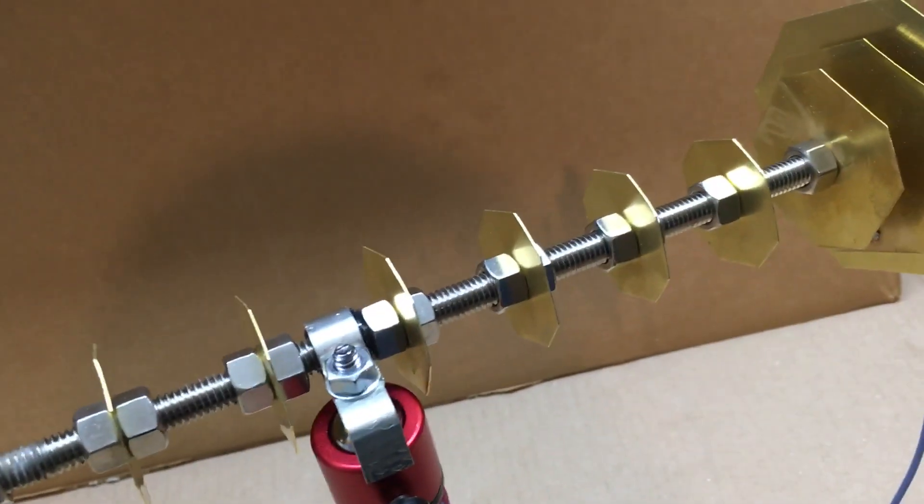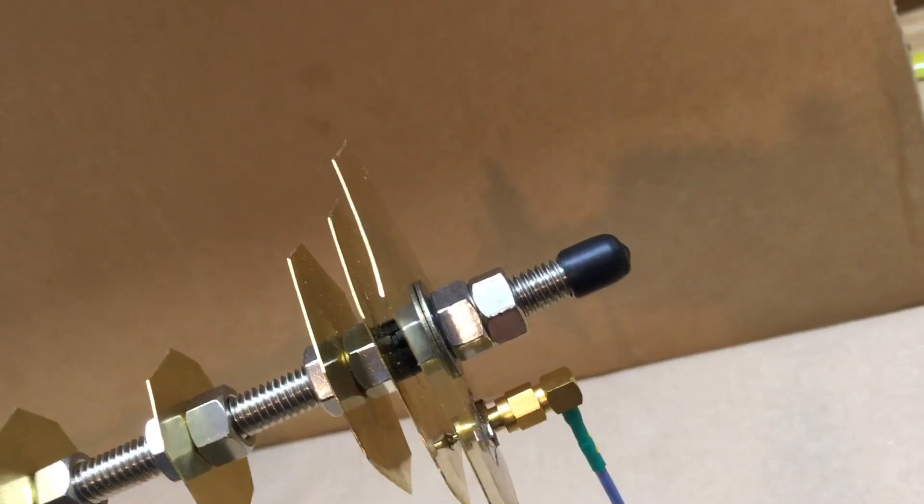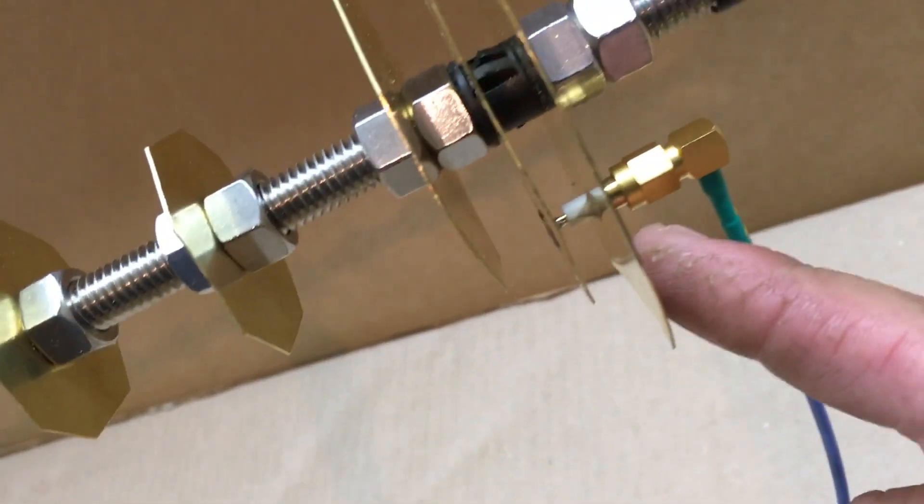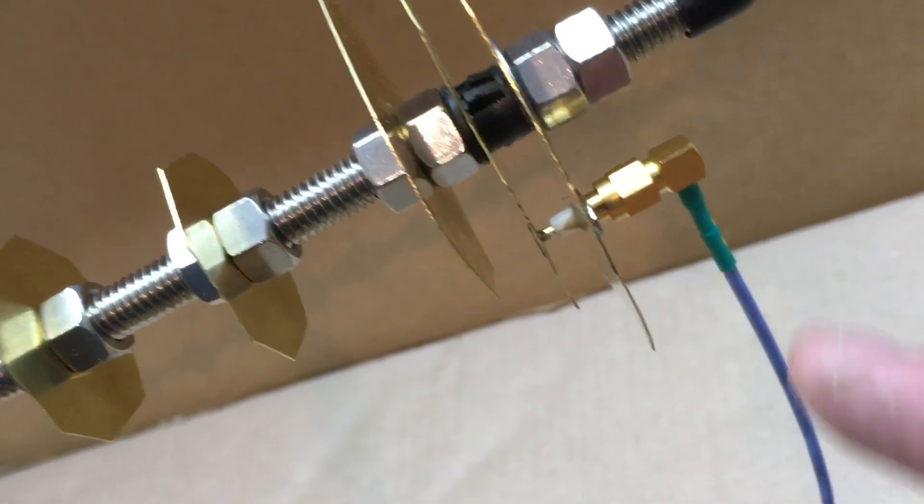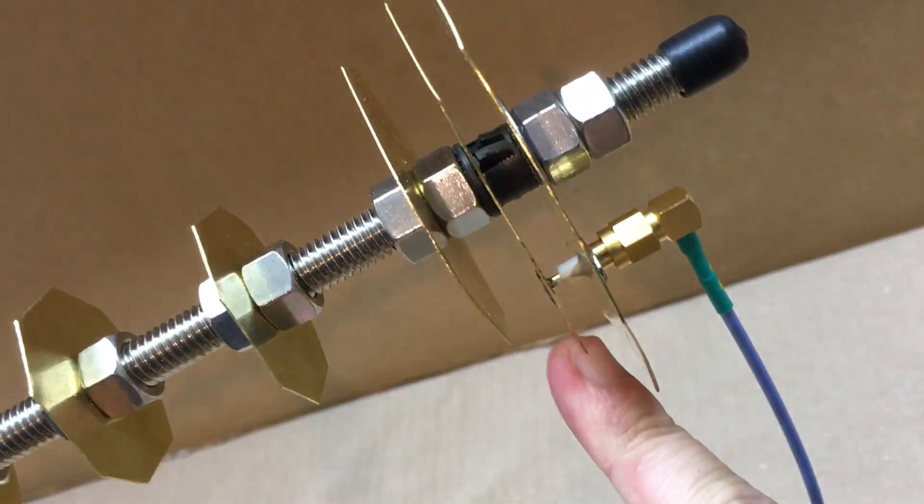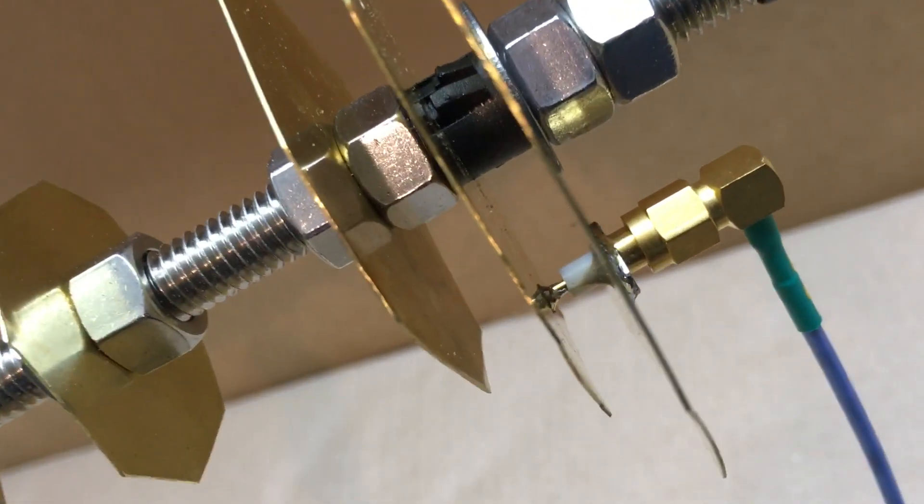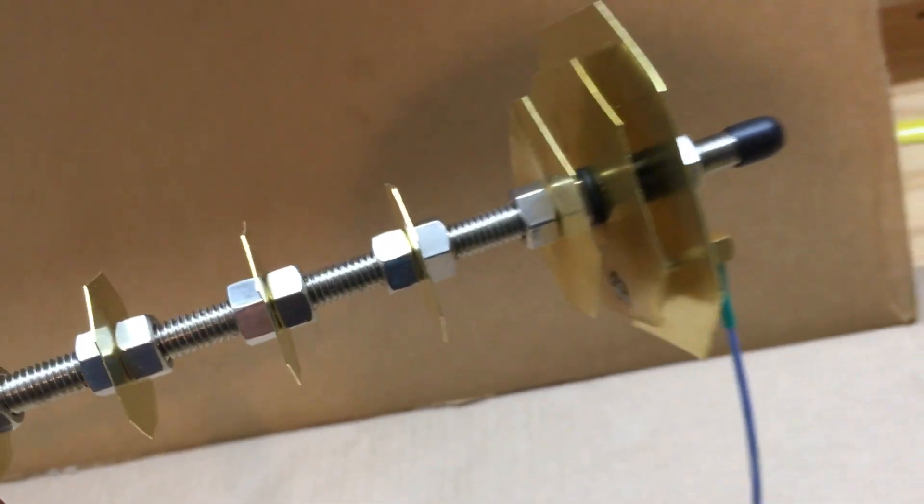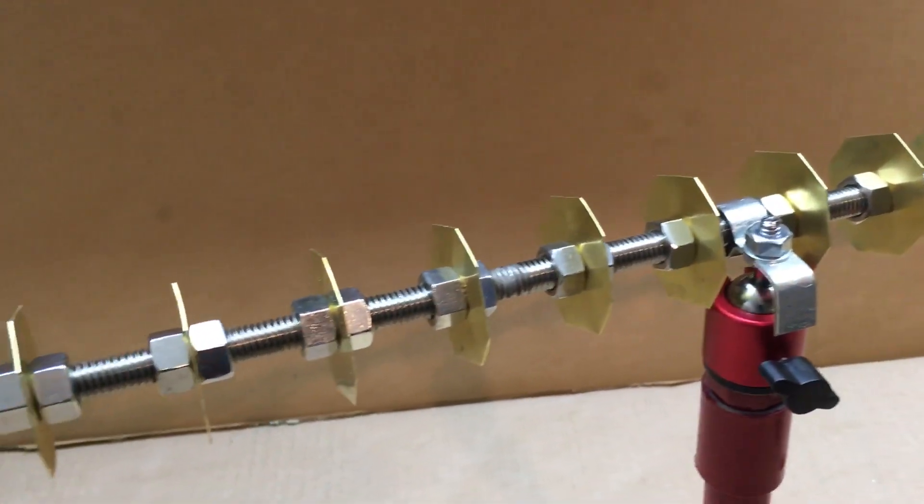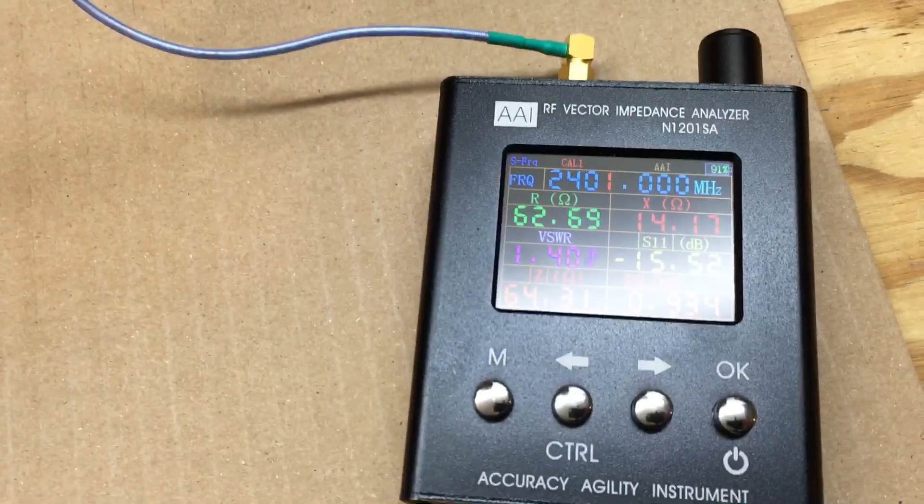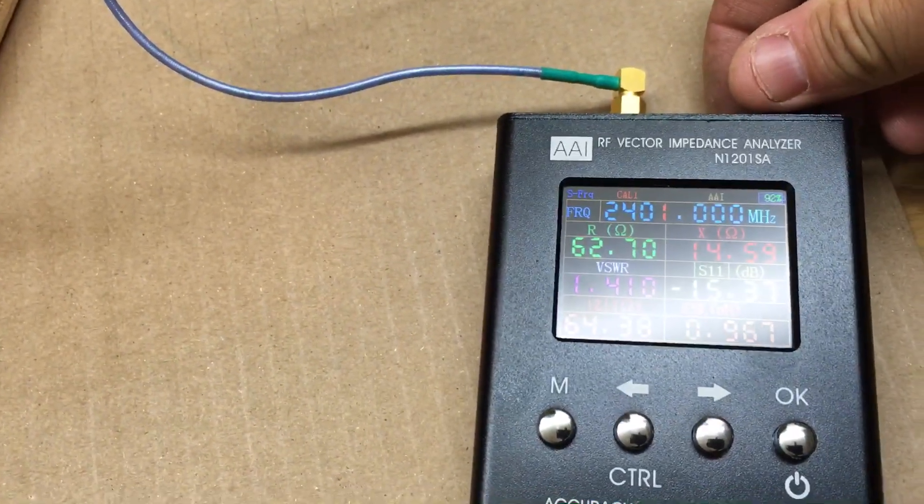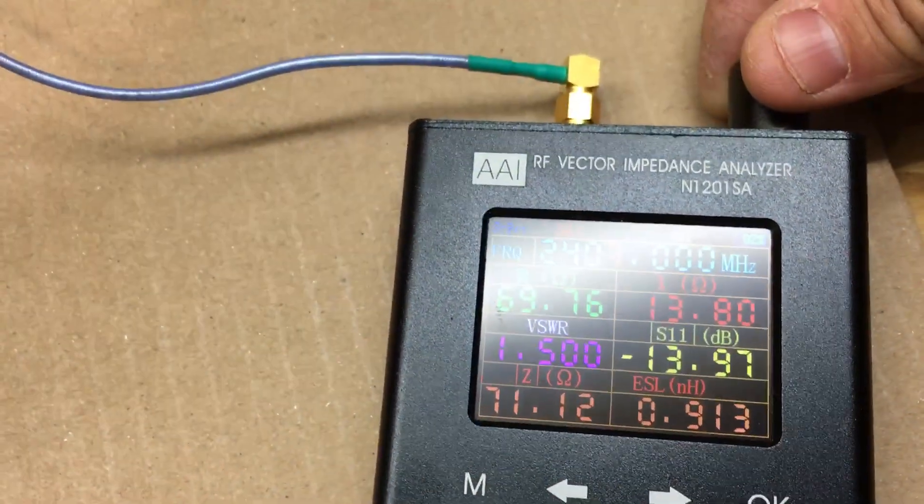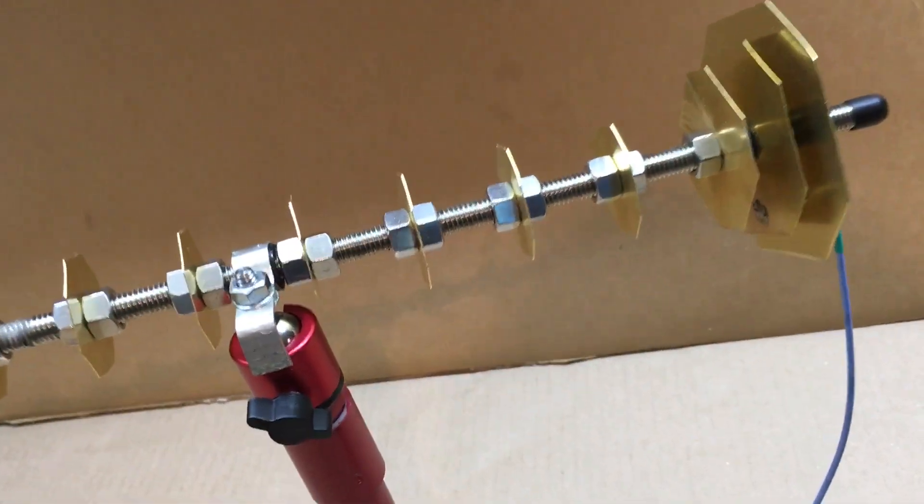Put some rubber caps on the front to cover up the ends. This is an SMA bulkhead with the center pin going through, soldered to the second element right there. We'll see what it does. I'll make another video of it in the test.